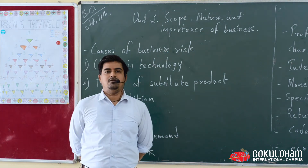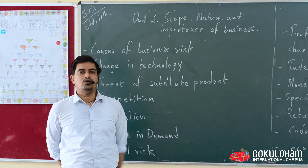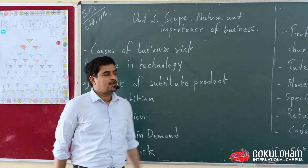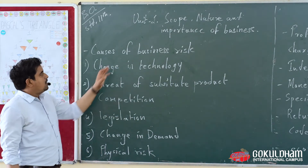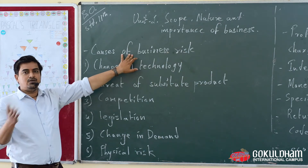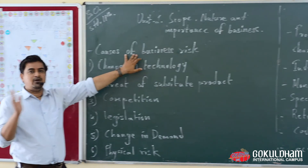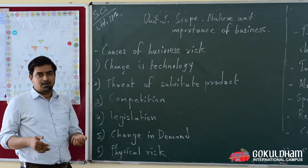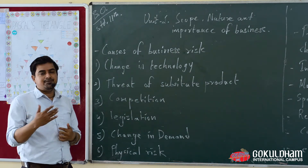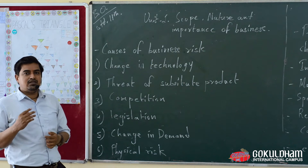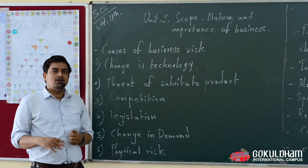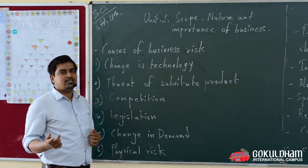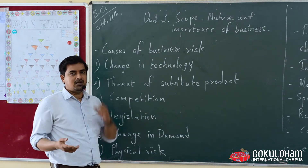Jai Swaminarayan everyone. Today in 11th standard Commerce, I am going to convey a new topic related to the causes of business risk. There are some causes through which the business suffers — risks that are adversely affecting its profitability and decision making. कुछ ऐसे रिस्क होते हैं business में जो उसकी profitability और उसकी decision making को बुरी तरीके से असर पहुंचाते हैं।